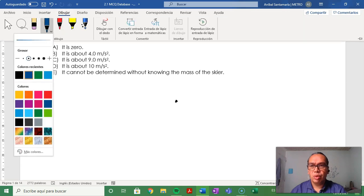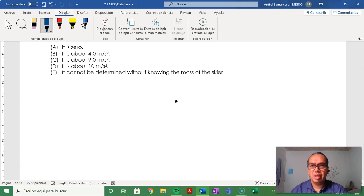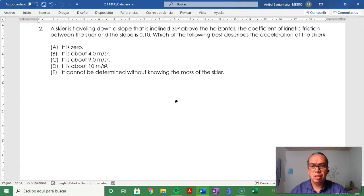Now, we know that there are three forces acting on the skier: a downward force mg, a perpendicular force to the surface, the normal, and a frictional force, ff.